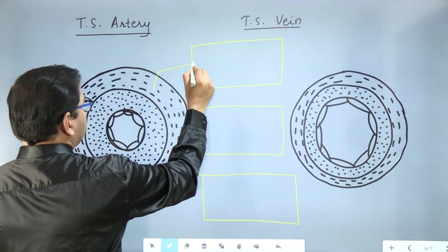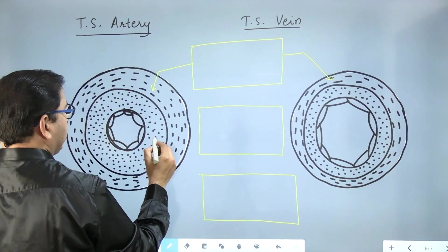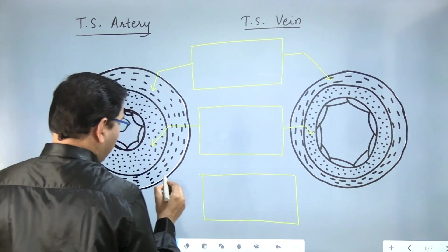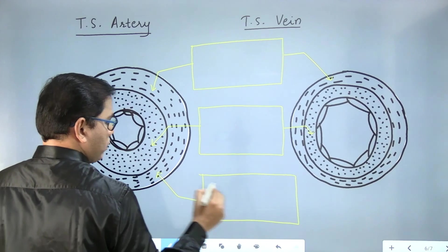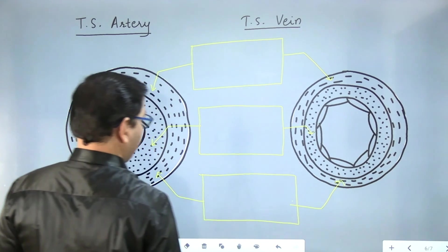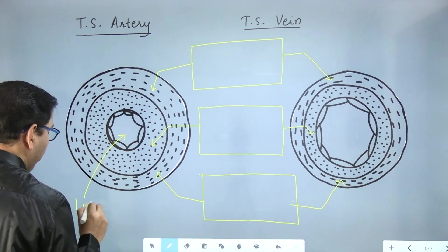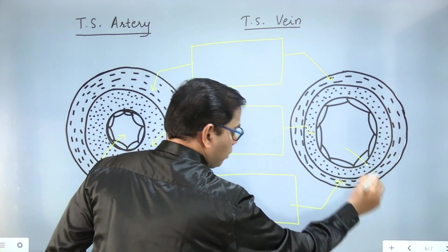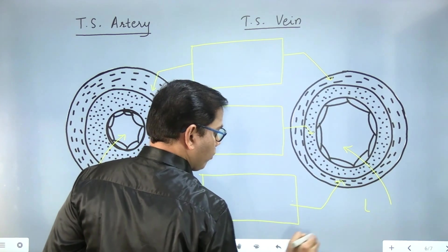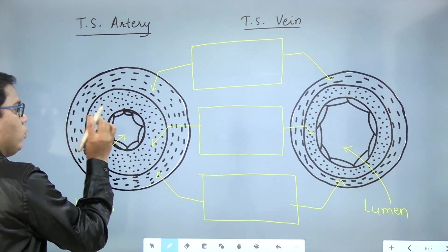And then a box for a third layer. This box is for the outermost layer. Here we will see what it is called in both cases. Then the middle layer and the outermost layer. And this part is called lumen. Here also this part through which blood flows is called lumen. The empty part or hollow part. Blood will flow through this.